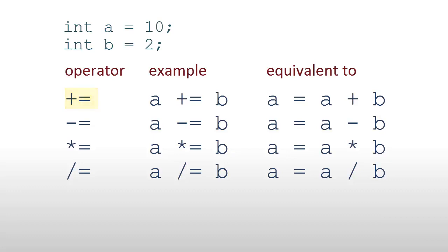If A is 10 and B is 2, A minus equals B subtracts 2 from A to give 8 and assigns that value back to the variable A.